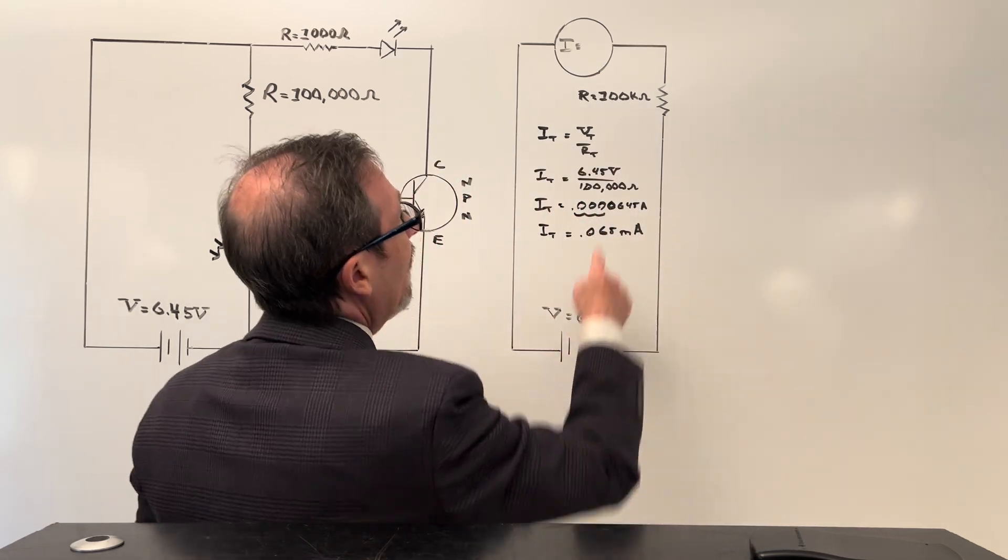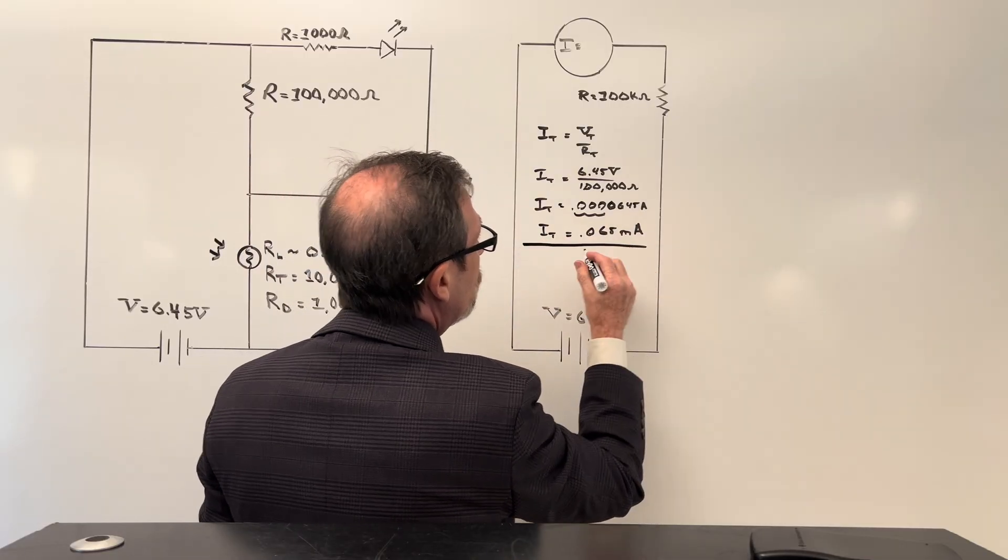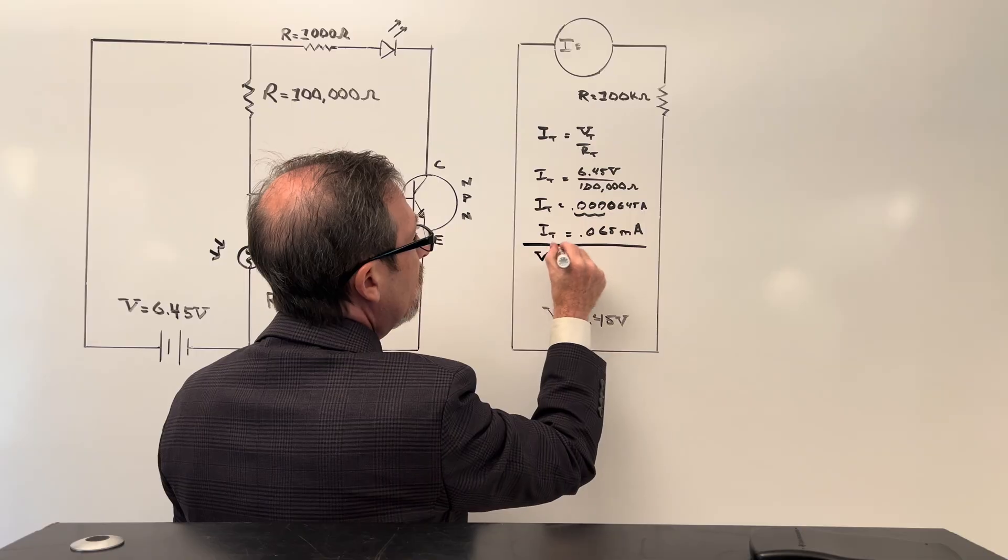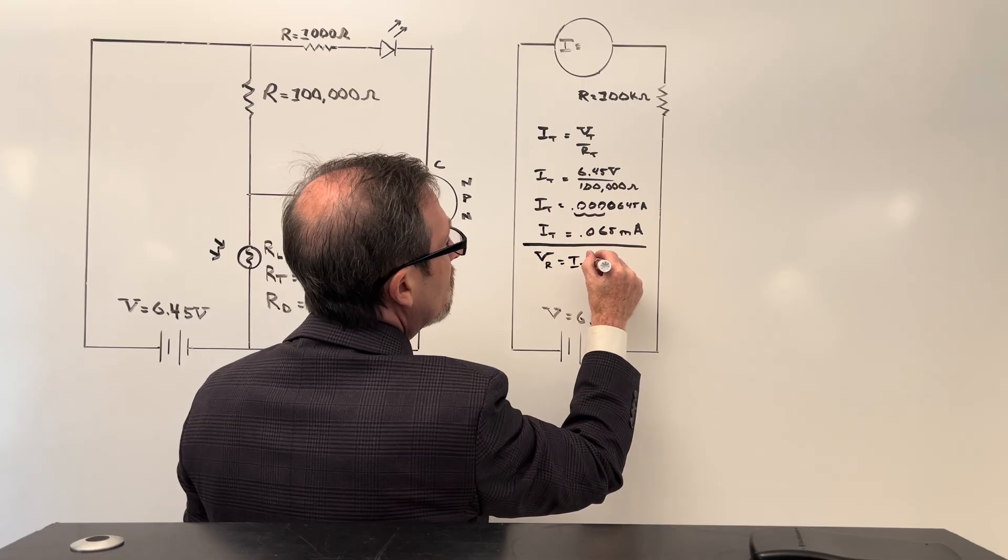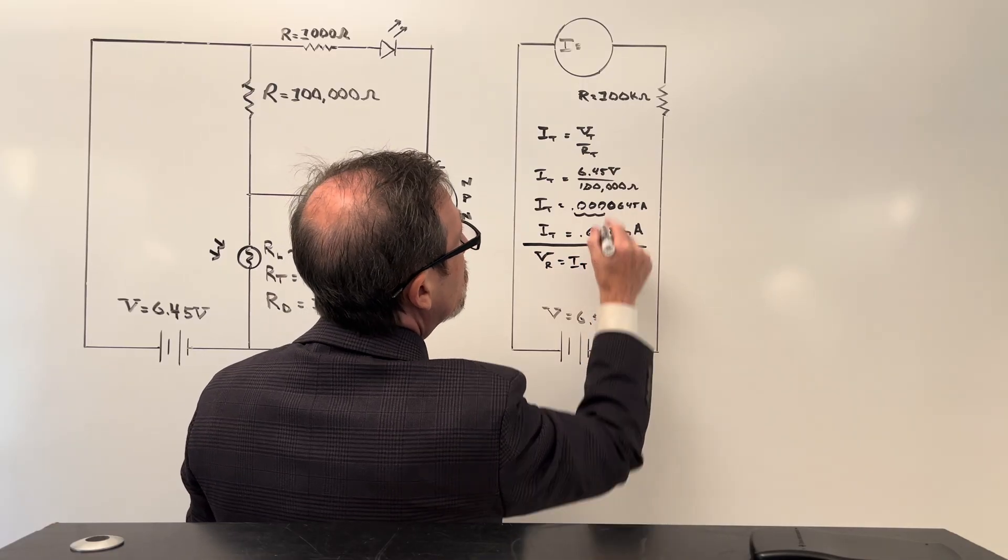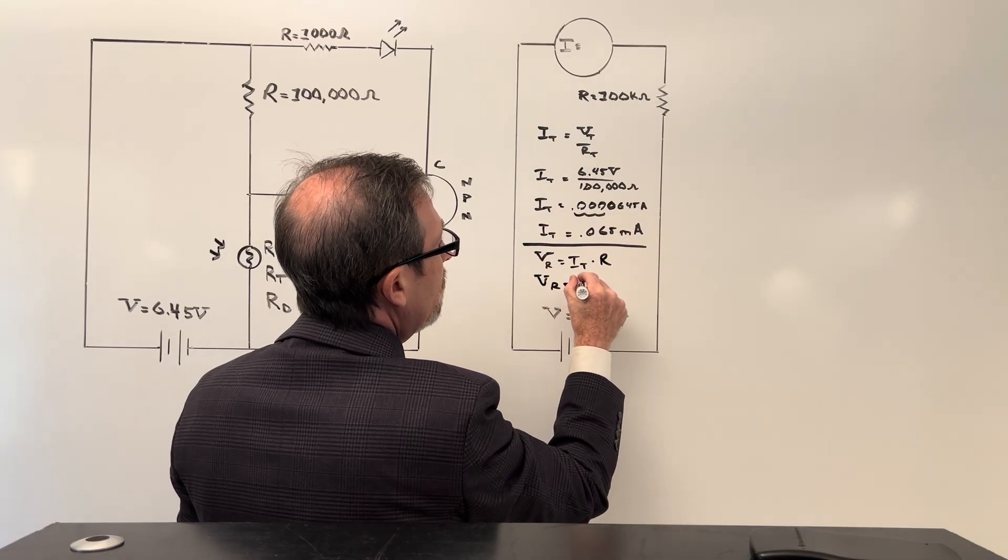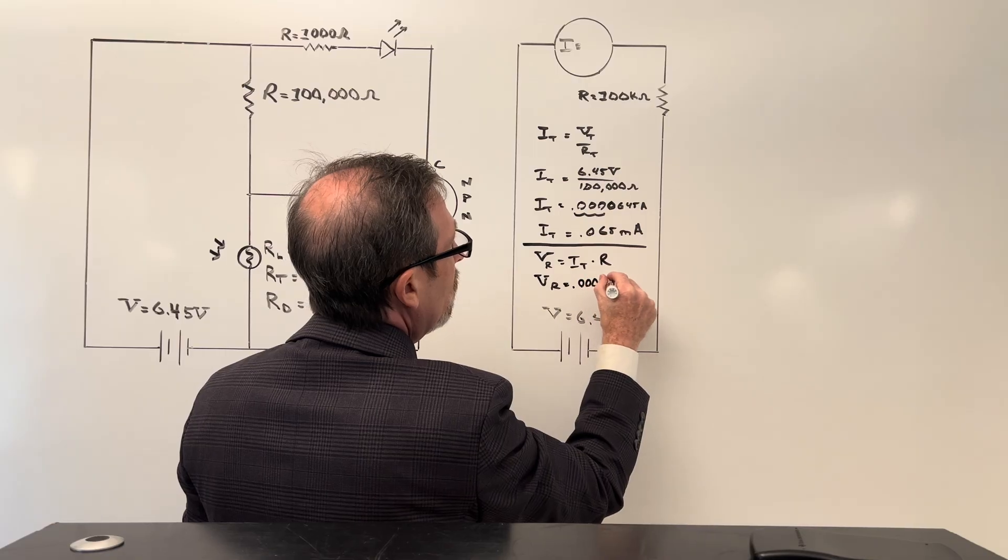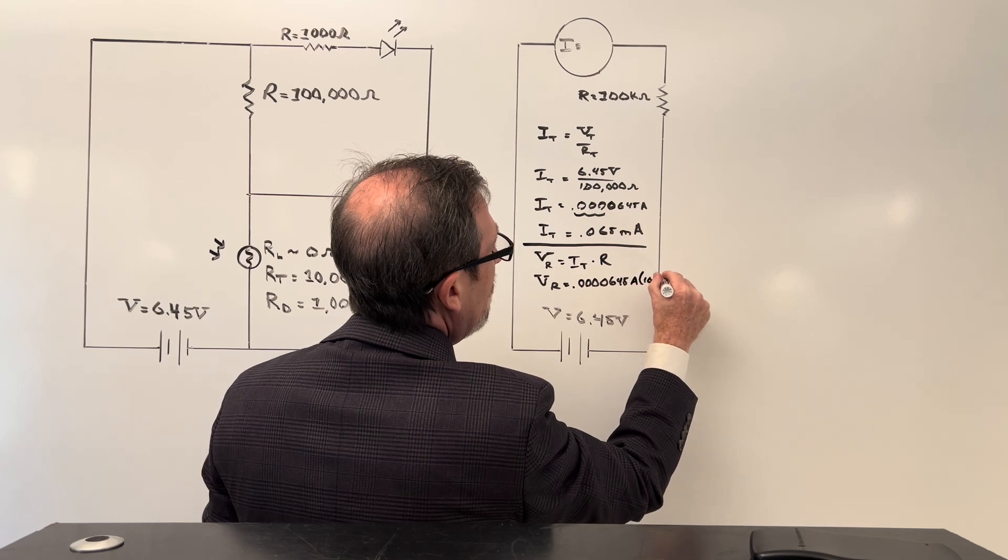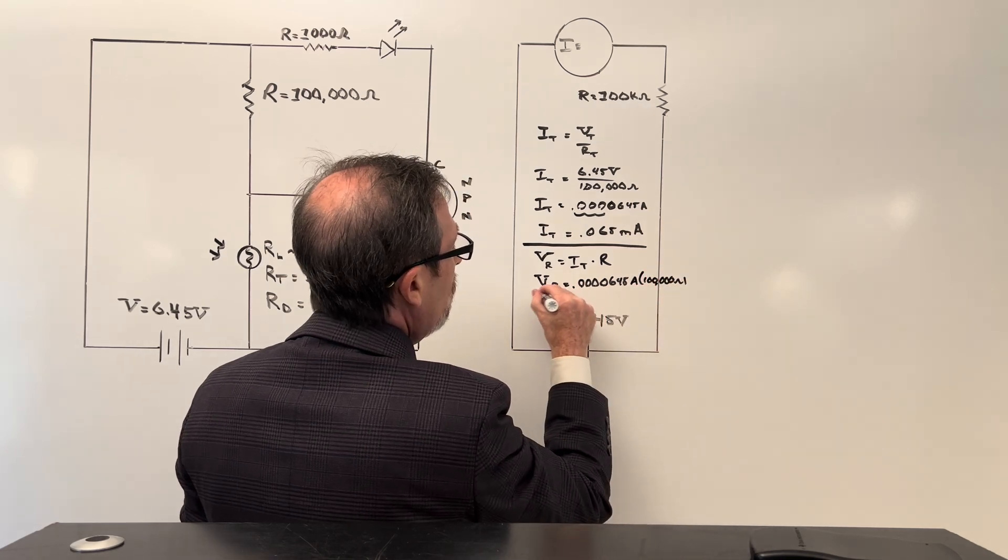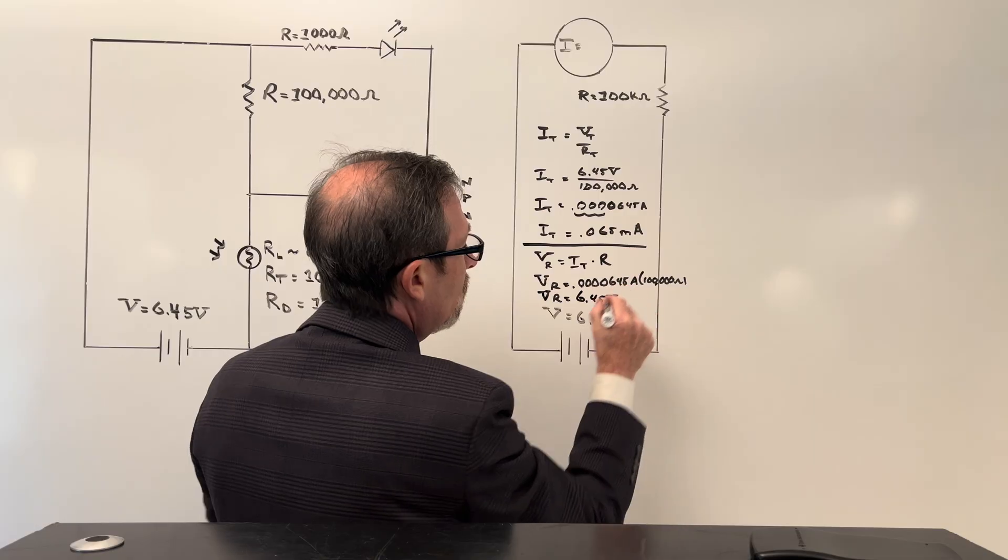Now if we wanted to work back and find out how many volts is on there, I could simply take this and say, well, and remember I rounded, my voltage across my resistor is going to be whatever the current is times my resistance, which is 100,000. And if I take my voltage across that resistor, it would be 0.0000645 amps times 100,000 ohms. And our voltage across that resistor would be our 6.45 volts.